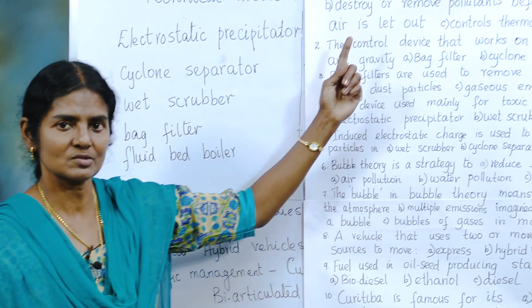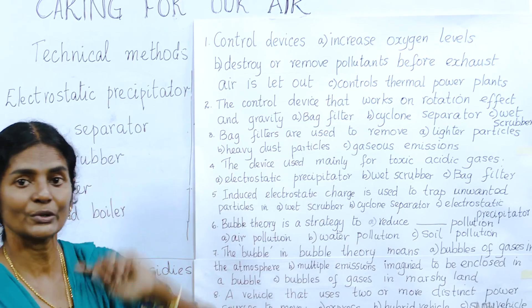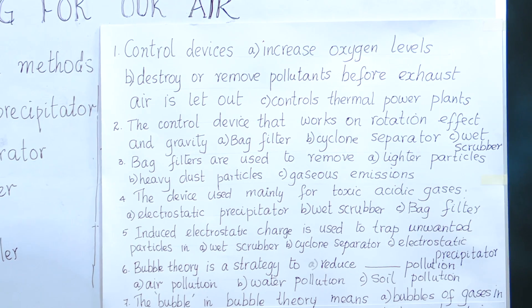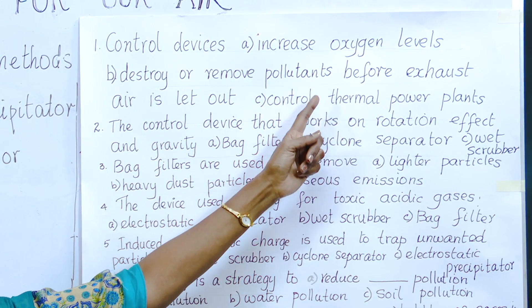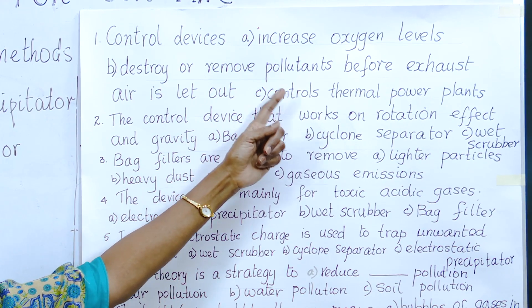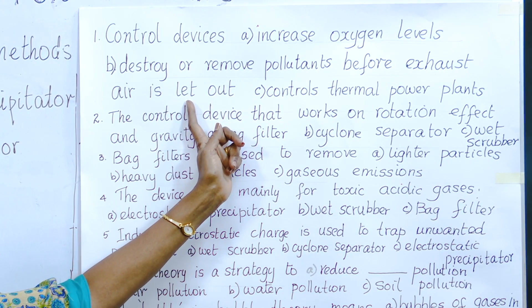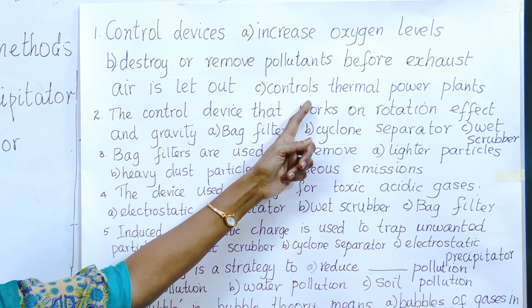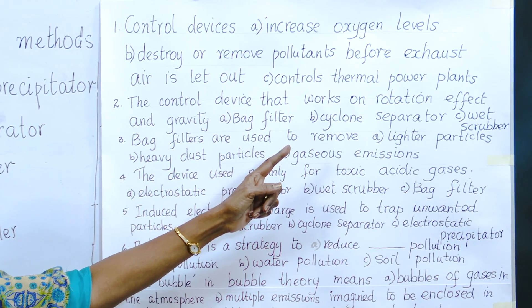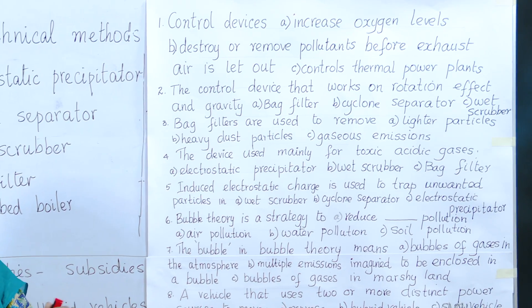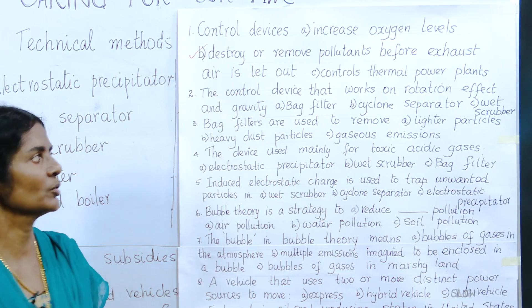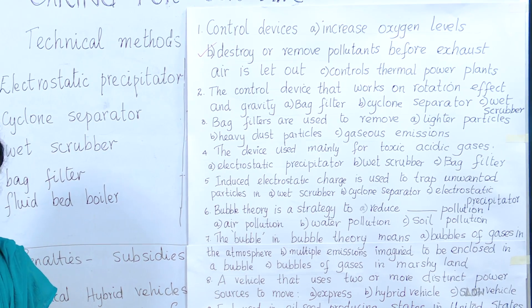Coming to the MCQs. First: what do control devices do? Do they increase oxygen levels? No. Do they destroy or remove pollutants before exhaust air is let out? Yes. Do they control thermal power plants? Maybe some devices, but not all. So the best option is B — they destroy or remove pollutants before the air is let out.